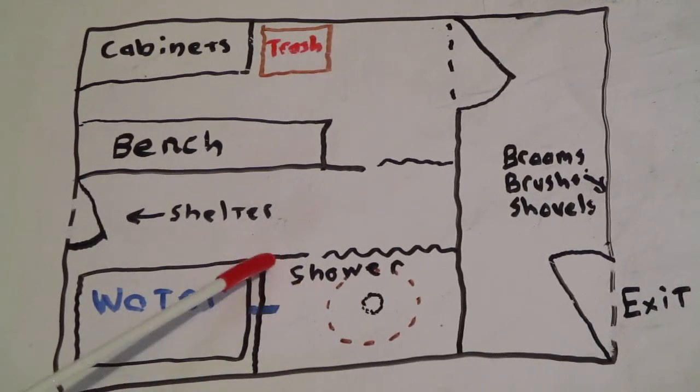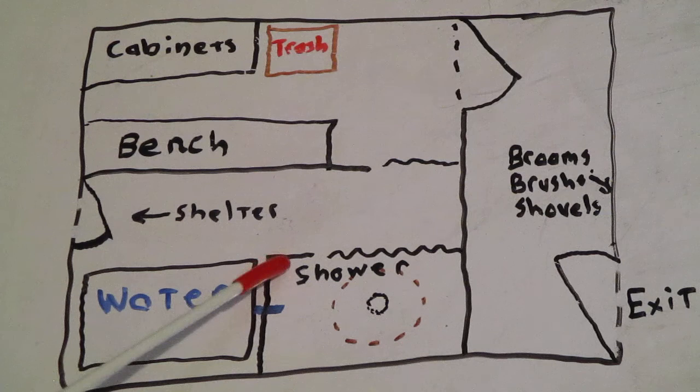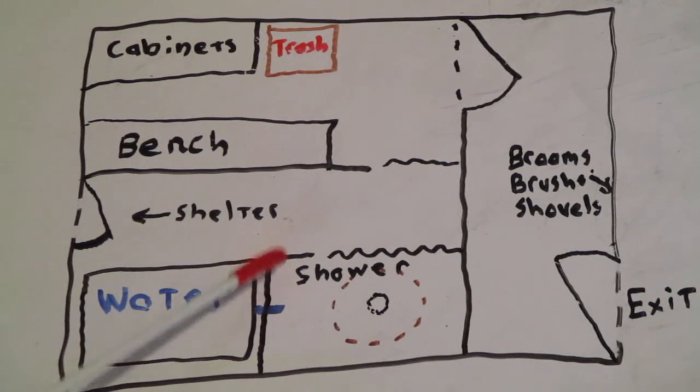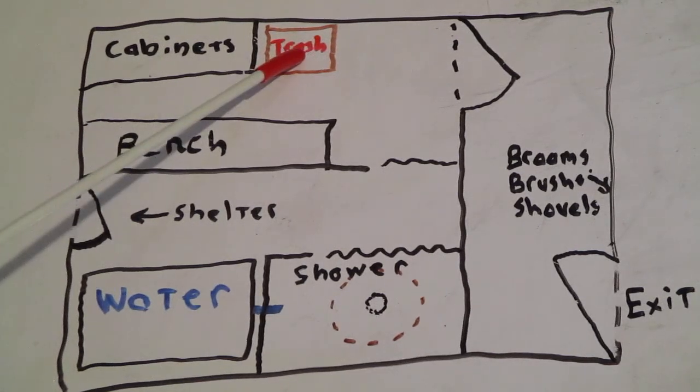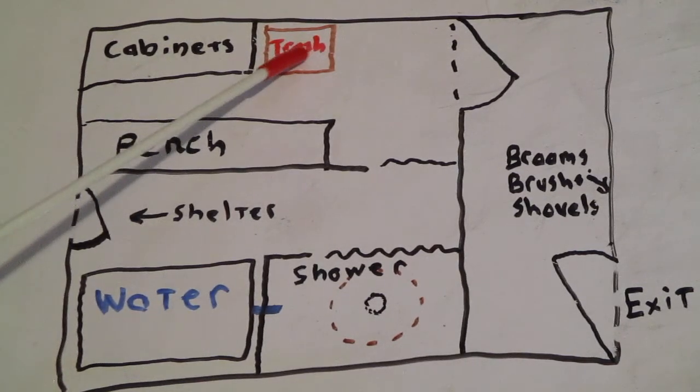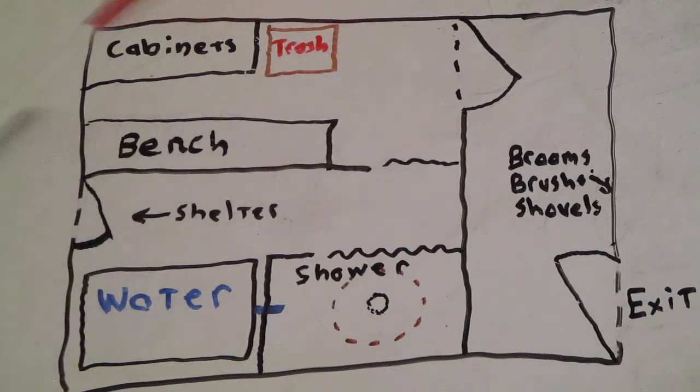You should also have some type of shower brushes hanging on the walls inside here too. Those shower brushes would get tossed inside the trash in here, which would get closed up and tossed out. Because it's possible that those brushes could contain fallout particles.